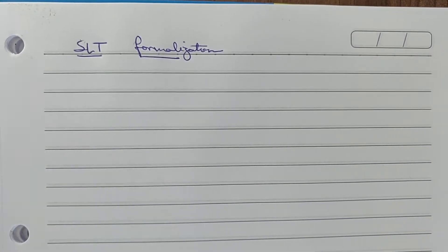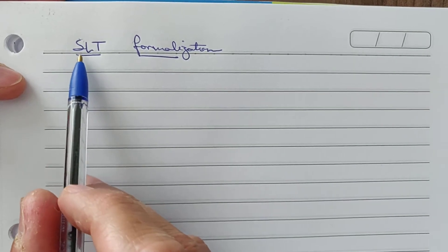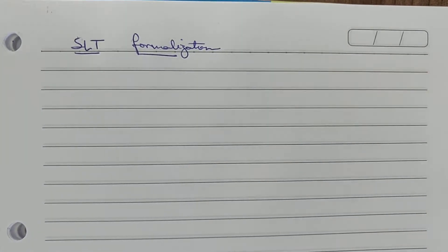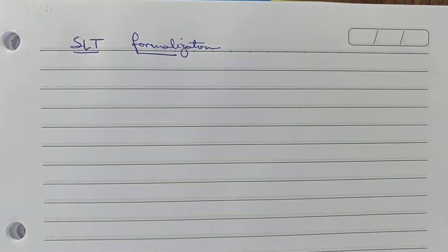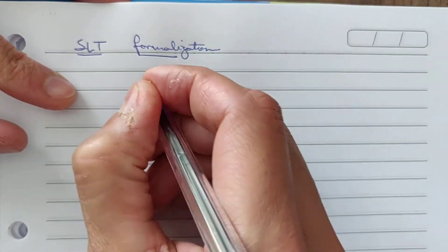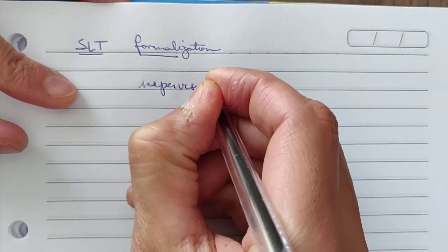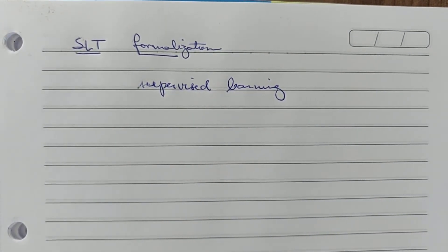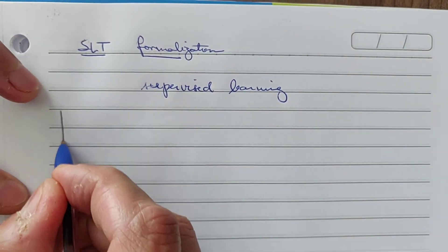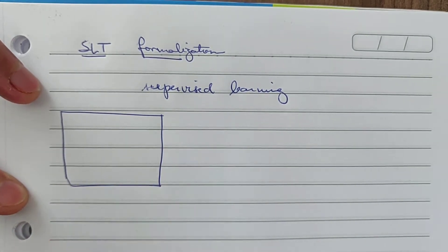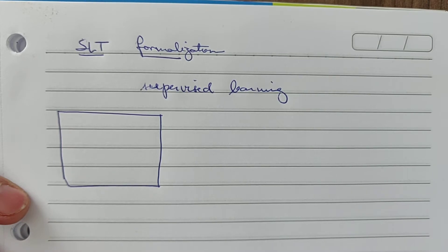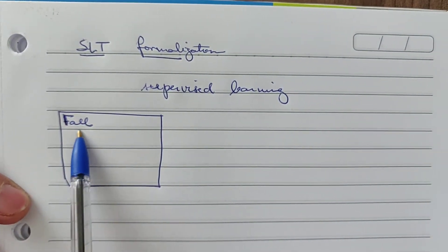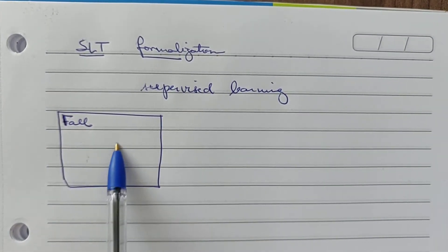Hello guys. Today we come back to the Statistical Learning Theory Formalization. We start with all this theory — all those theoretical guarantees for supervised learning. I'm going to start with a very simple and first idea about the Statistical Learning Theory. Let's suppose we have inside this rectangle or square all possible functions in nature, and I'm going to call this space F-all — the space containing all functions in the universe.